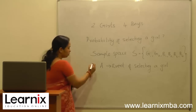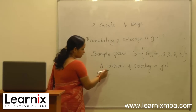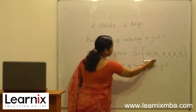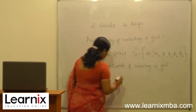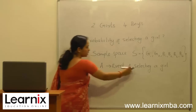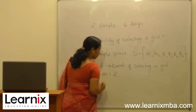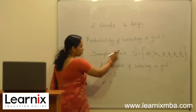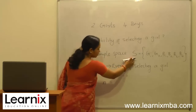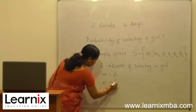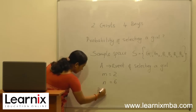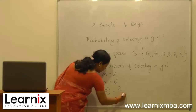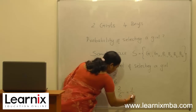The number of favorable cases for selecting a girl, m, is equal to two, since out of the six students in the class only two are girls. The total number of elements in the sample space S, n, is equal to six. Therefore, the probability of A — that is, the probability of selecting a girl — is equal to two by six, or one by three.